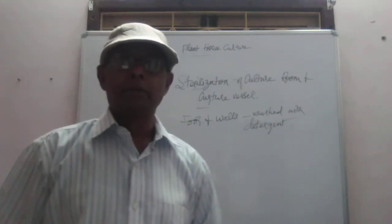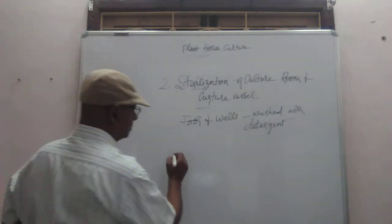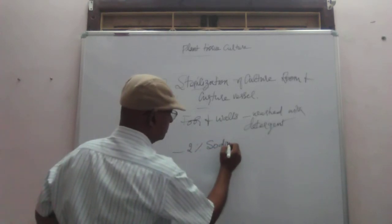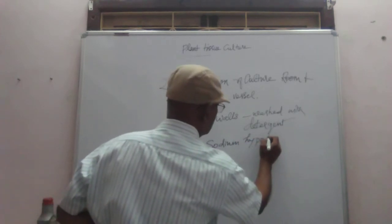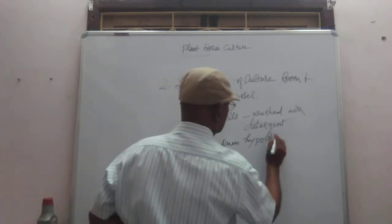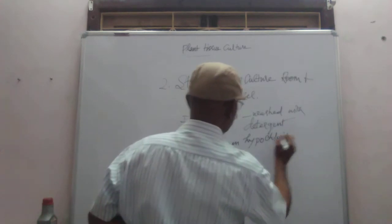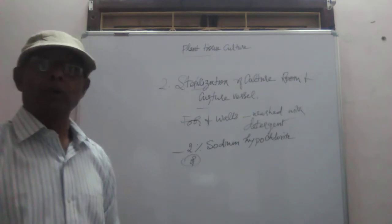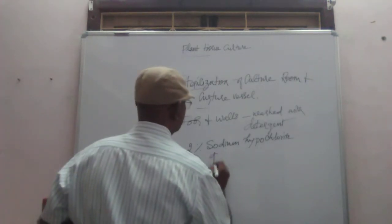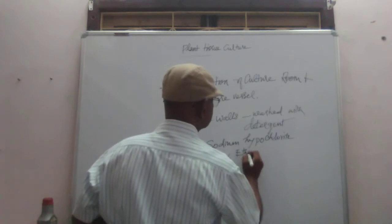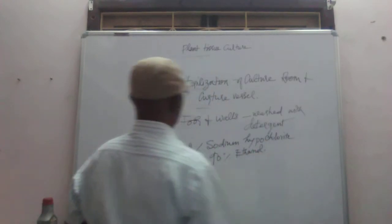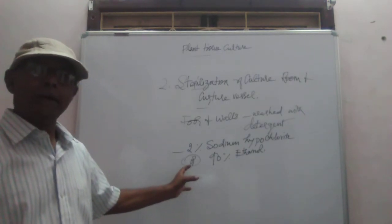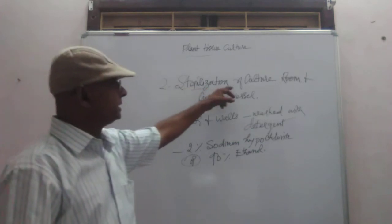And then it is cleaned with 2% sodium hypochlorite or 95% ethanol or 90% ethanol. These are all the procedures followed in the sterilization of culture room.